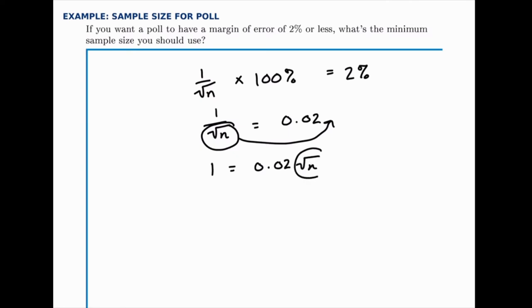And then again we're trying to get this part by itself, so we'll divide both sides by 0.02, which gives us 1 over 0.02 equals the square root of n.